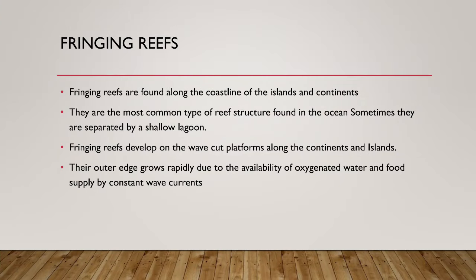Fringing reefs are found along the coastlines of islands and continents. They are the most common type of reef structure found in the ocean. Sometimes they are separated by a shallow lagoon. Fringing reefs develop on wave-cut platforms along the continental and island coastlines. Their outer edge grows rapidly due to the availability of oxygenated water and food supply from constant wave currents.